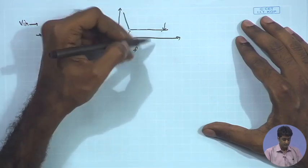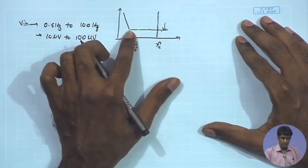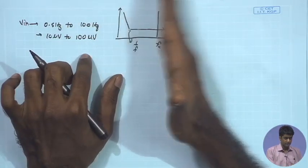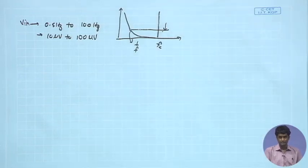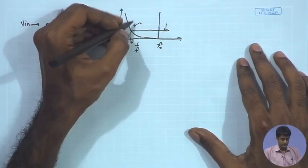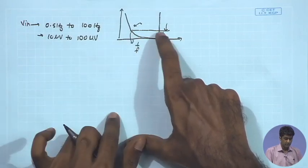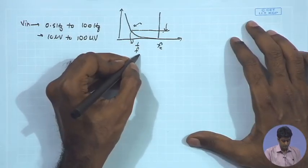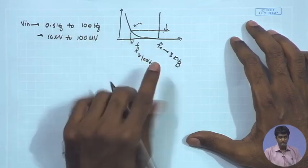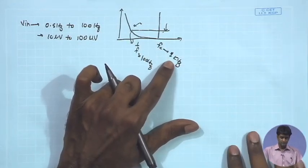Once we have done that, we decide the chopper frequency f_c with which we are going to multiply the signal. We assume f_c is sufficiently higher than the 1/f corner frequency — at least four to five times higher — so that the input signal is isolated from the 1/f noise spectrum. If we push the 1/f corner to 100 Hz and choose f_c to be ten times higher, that gives a chopping frequency of 1 kHz.